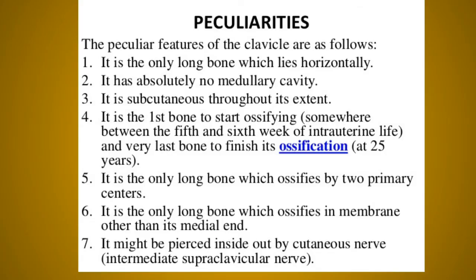Now the peculiarities of the clavicle bone. The clavicle is the only long bone in the body that lies horizontally — all other long bones are vertically placed except the clavicle. Also, the clavicle is subcutaneous throughout. It is the first bone to start ossifying in your body, and it is the only long bone which ossifies in membrane — all other bones ossify in cartilage.